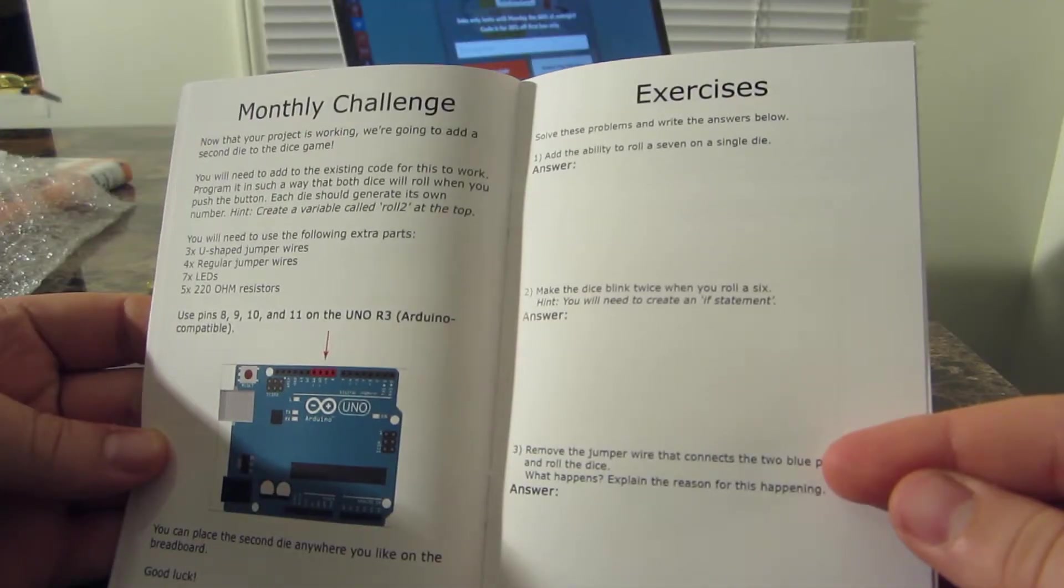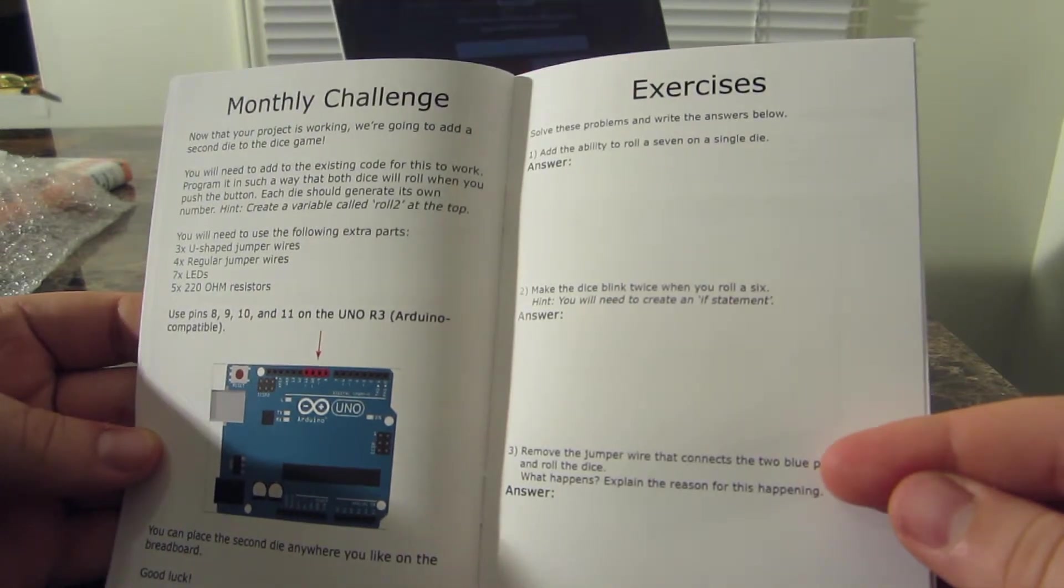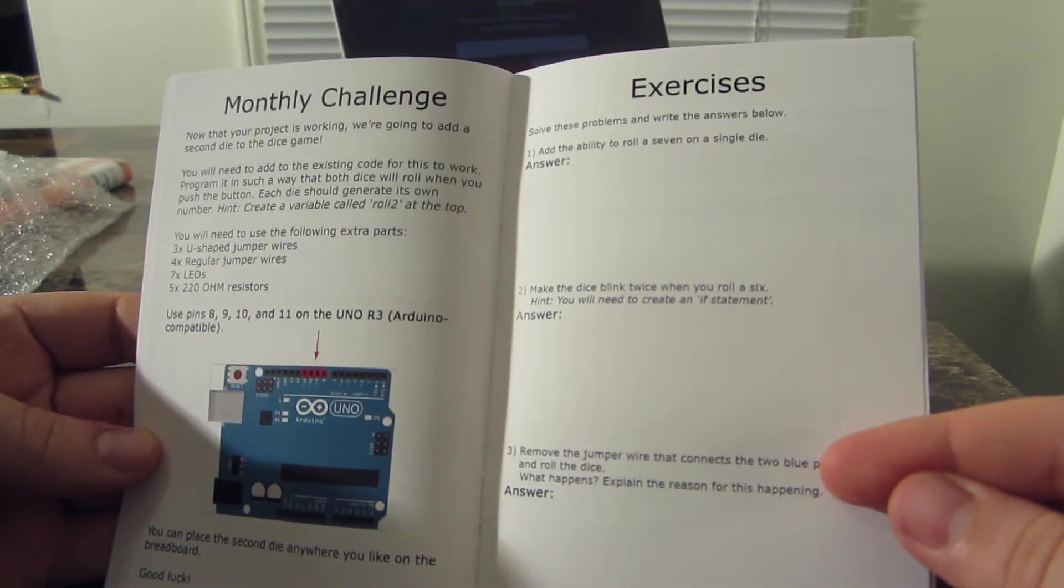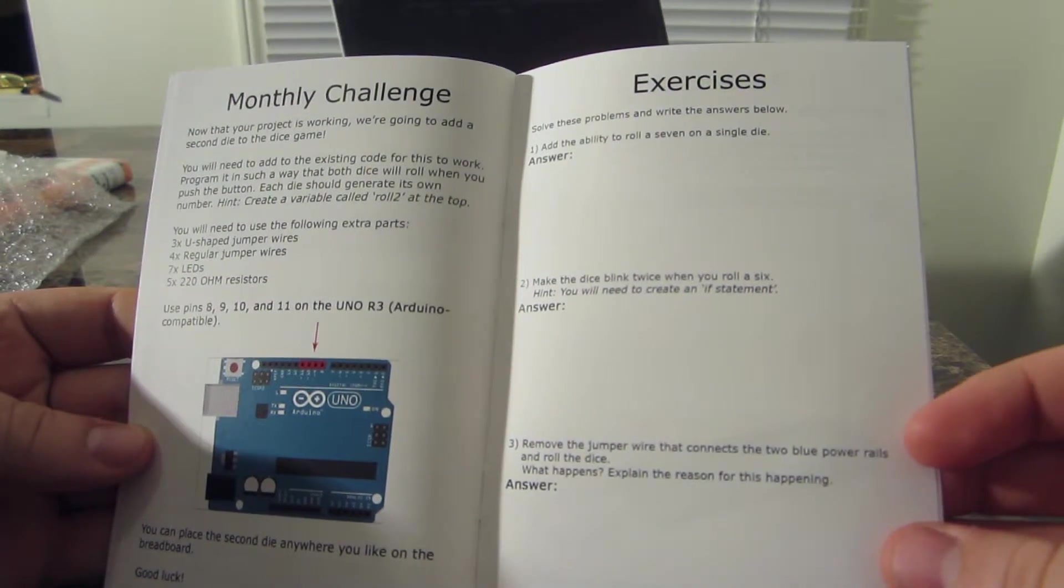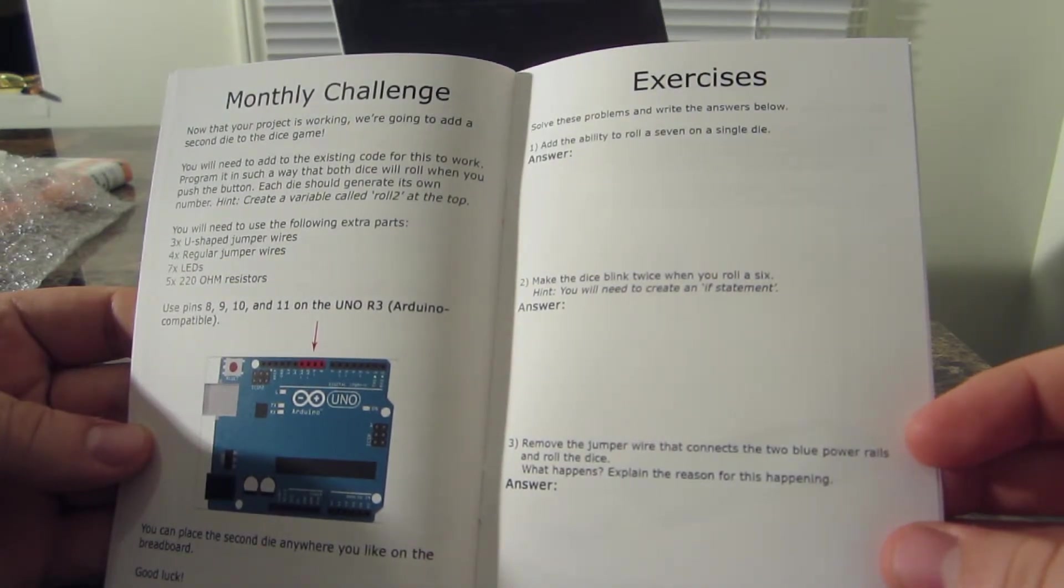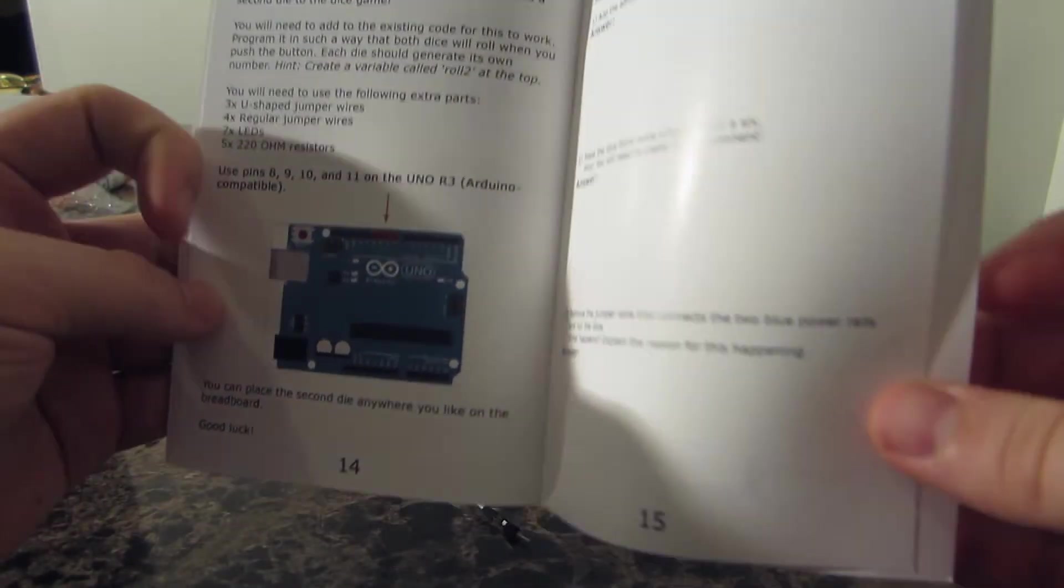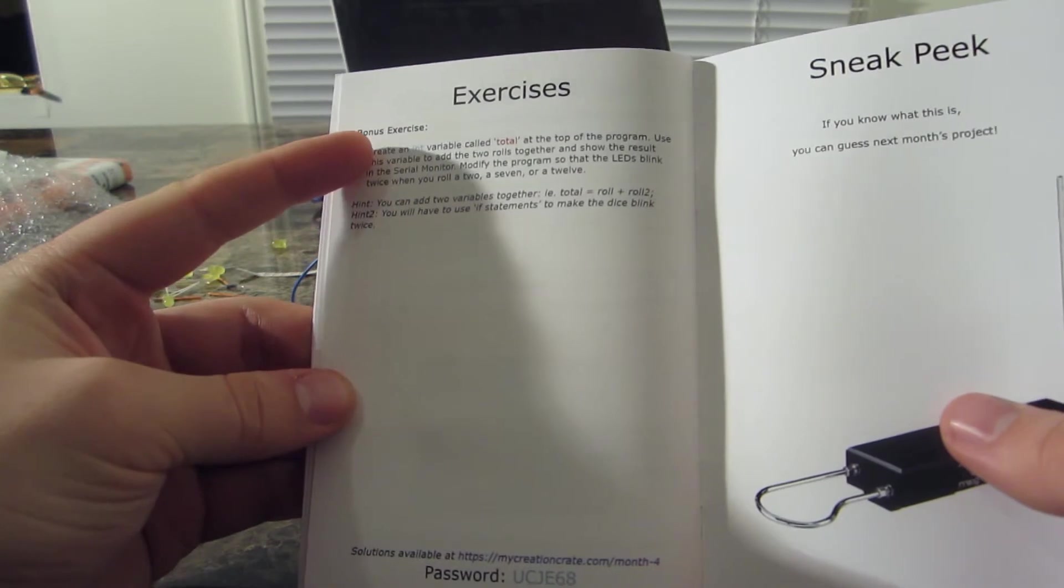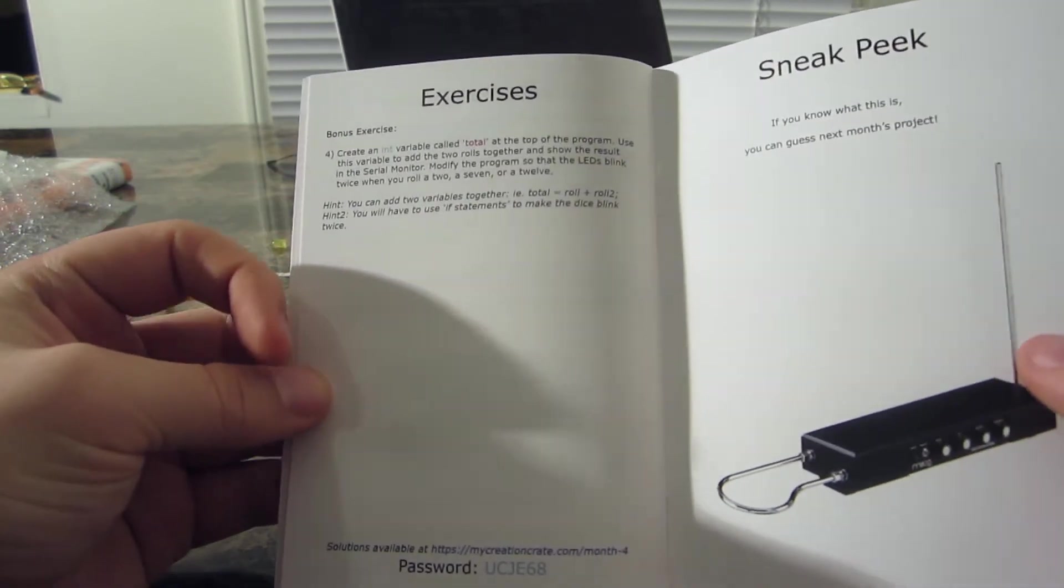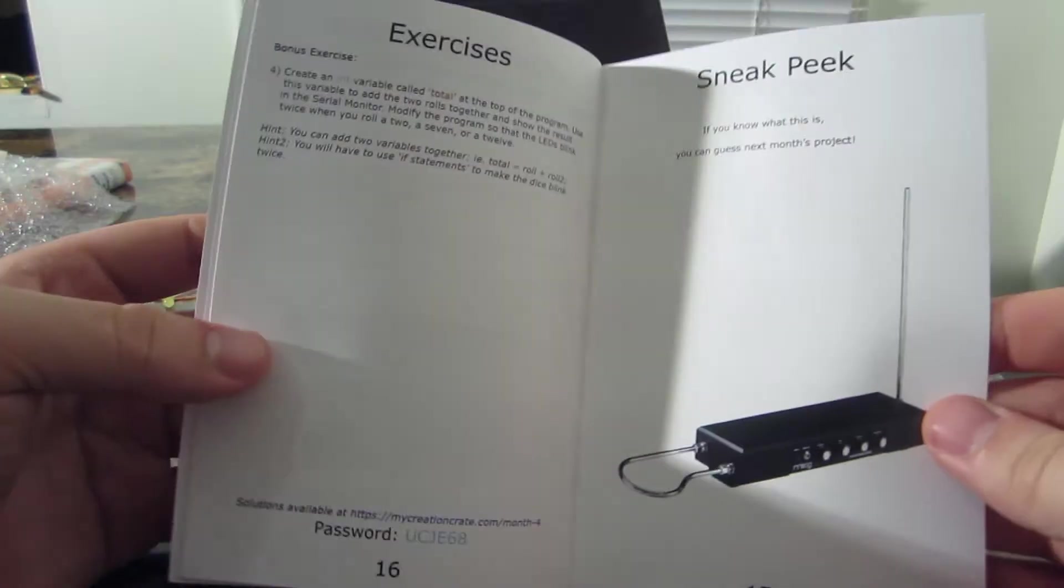Exercise one: you can add the ability to roll a seven on a single die. Two: you could make the dice blink twice when you roll a six. And three: you could remove the jumper wire that connects the two blue power rails and roll the dice. What happens? Explain the reason for this happening. And last but not least, there is a bonus exercise, but I will let you buy this product to figure out what that is.